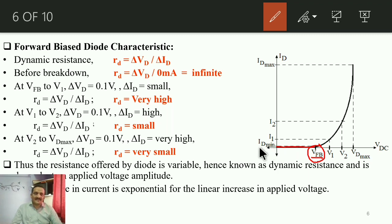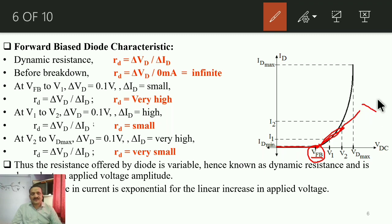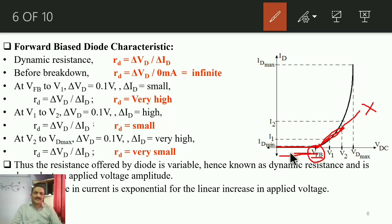As the voltage is increased beyond VFB with a constant step size, the current increases exponentially — not linearly. This is why the diode is a non-linear device. The characteristic curve is not a straight line; the current rises exponentially with linear increases in applied voltage.